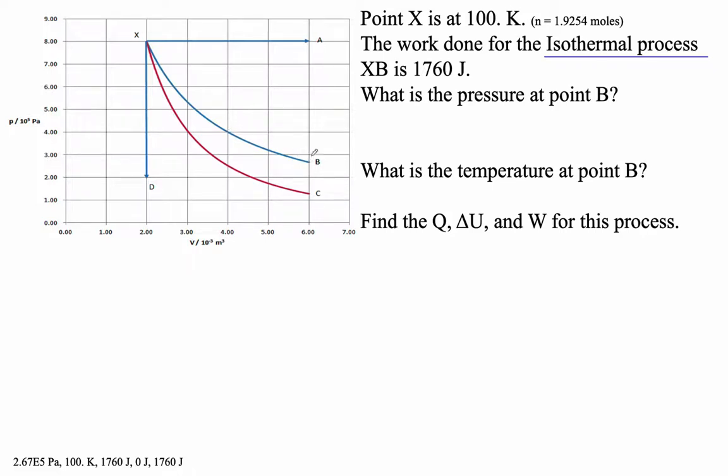So notice that this is not an even number there, so we'll figure that out. That's an isothermal process. So what's the pressure at point B? Well,